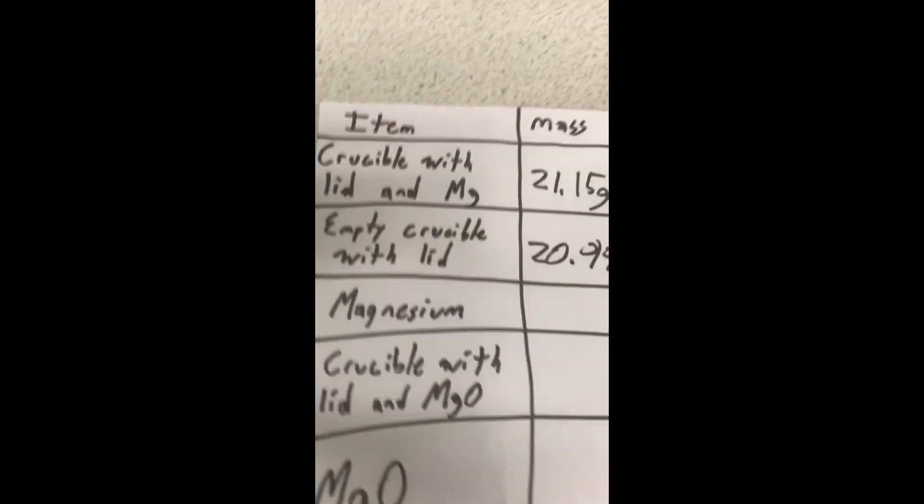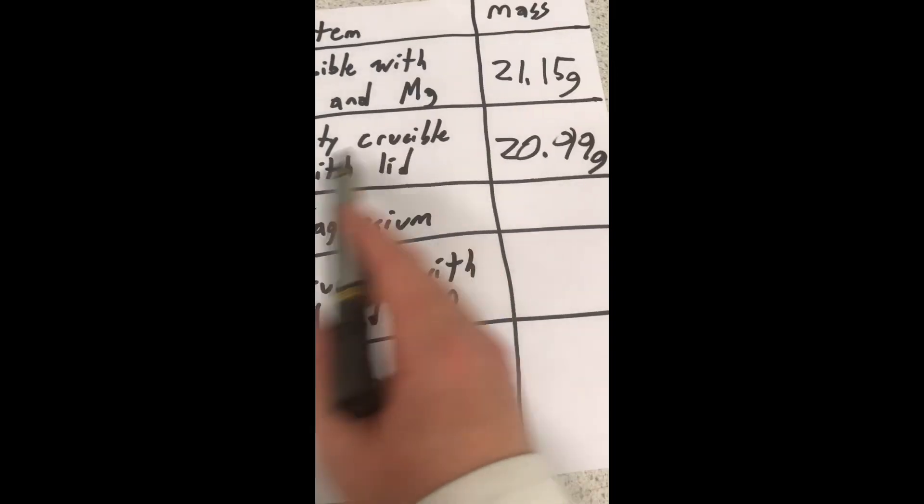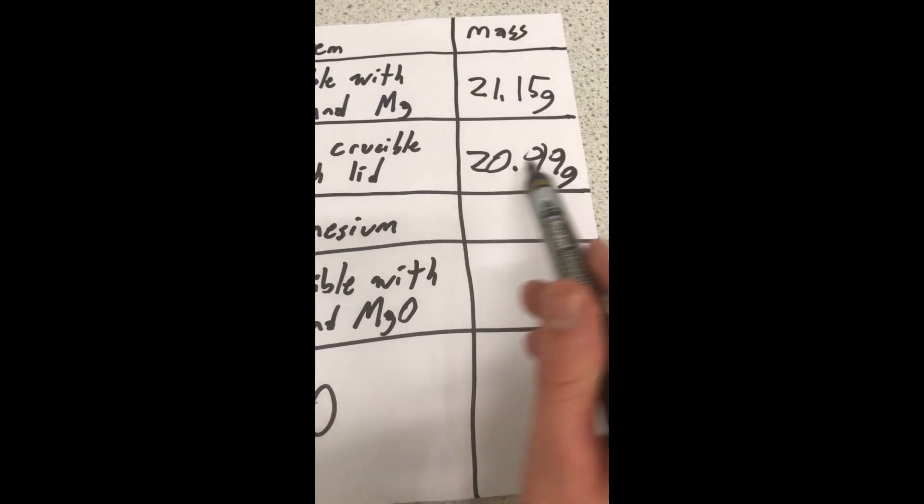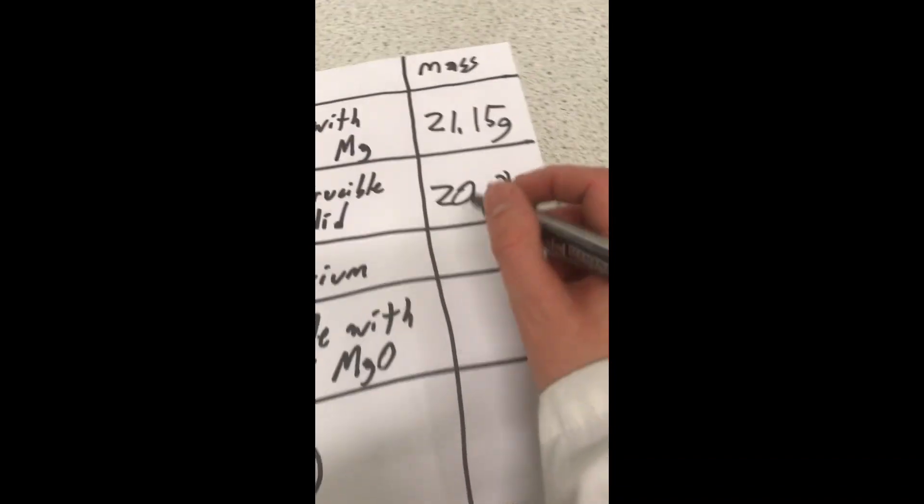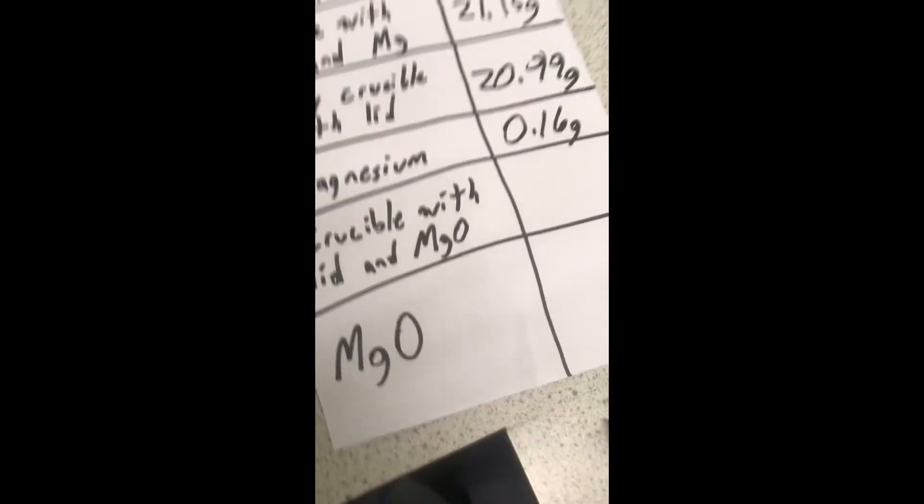Now, subtracting the mass of the crucible with the lid and magnesium from the empty crucible, so taking 21.15 minus 20.99 gives me 0.16 grams for the magnesium.